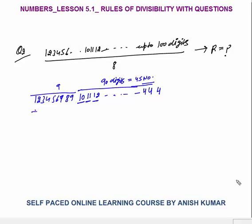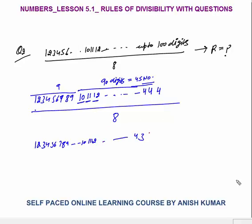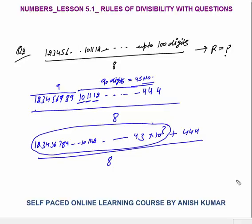This number is divided by 8. For divisibility by 8, we only check the last 3 digits. The last 3 digits are 4, 44 (i.e., 444). We can write the number as (everything before) × 1000 + 444. The first part is a multiple of 1000, which always gives remainder 0 when divided by 8. So we only need to find the remainder of 444 ÷ 8.